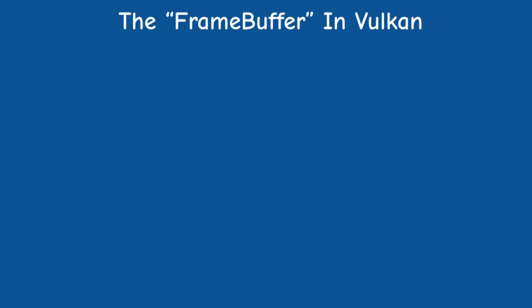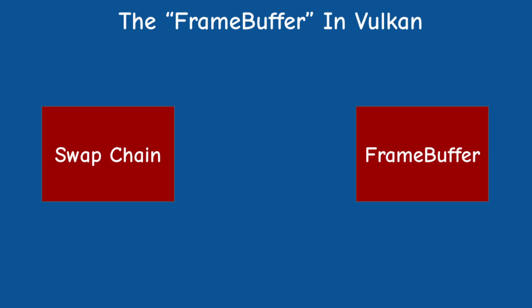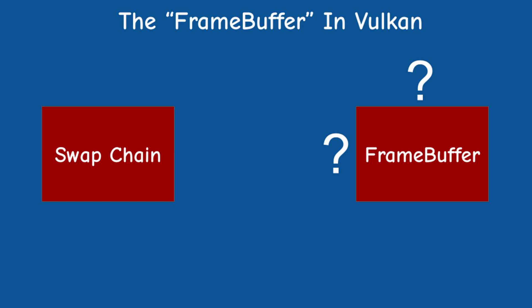In Vulkan we actually have two objects that take up the responsibilities of the OpenGL framebuffer. These objects are the swapchain and the framebuffer, but don't confuse the OpenGL framebuffer with the Vulkan one. Despite the name they are not entirely overlapping - it's a bit confusing but it will become clearer as we make progress.